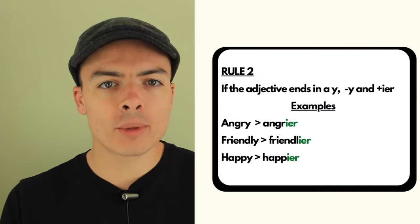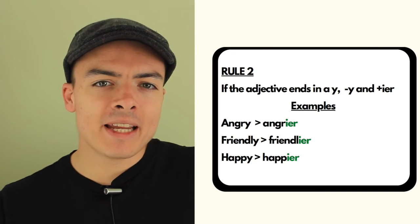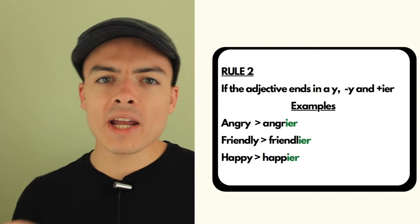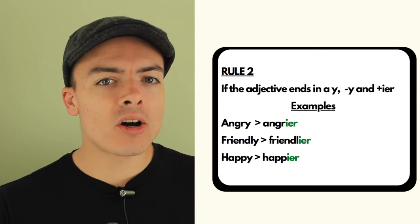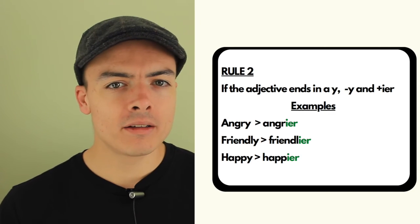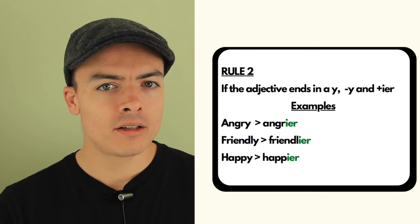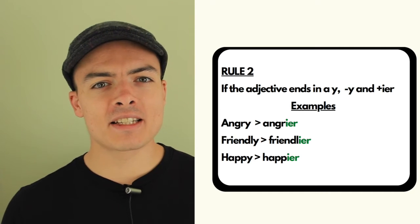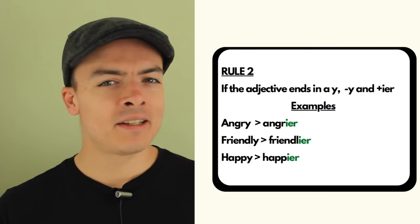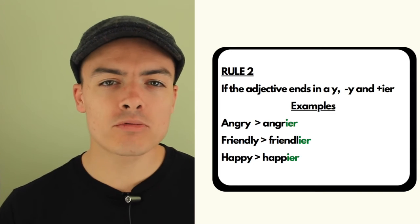If the adjective ends in a y, this is rule number two. If the adjective ends in a y, for example angry, friendly, happy, what we do is we take away the y and we add i-e-r. So happy becomes happier, friendly becomes friendlier, and angry becomes angrier. That's rule number two.